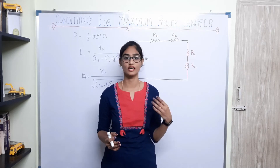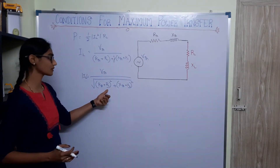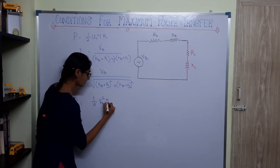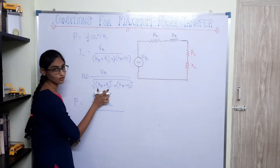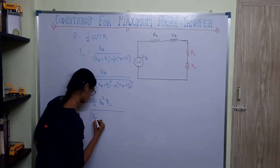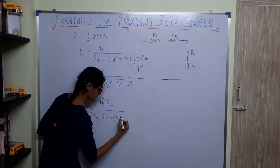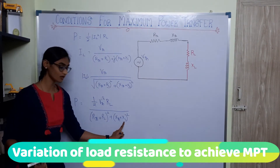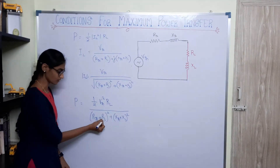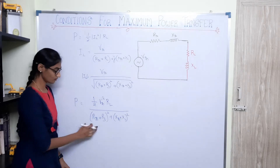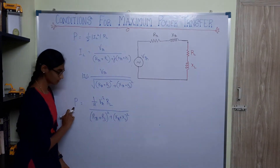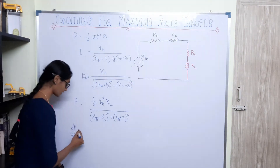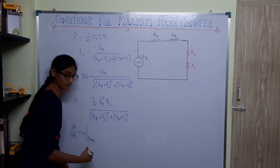Whatever we are aiming to adjust, we need to differentiate the power with respect to that term. The power equation is: P = ½ · VTH² · RL / [(RTH + RL)² + (XTH + XL)²]. For example, if I am planning to vary the load resistance alone with load impedance constant, my variable is RL, and I need to find the slope of the curve with respect to RL. So the partial derivative of P with respect to RL equals 0 at P_max.